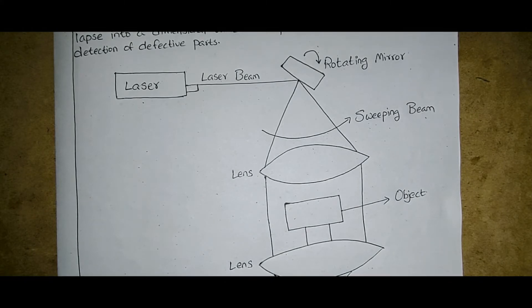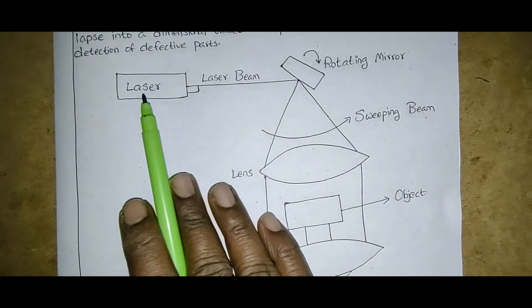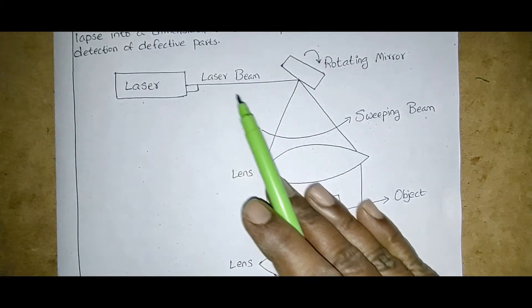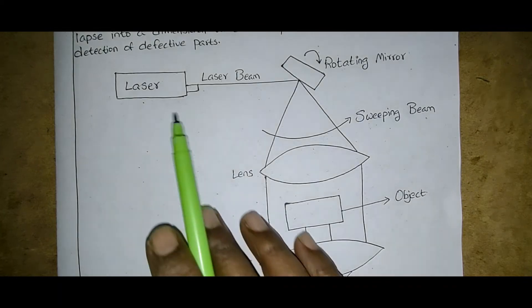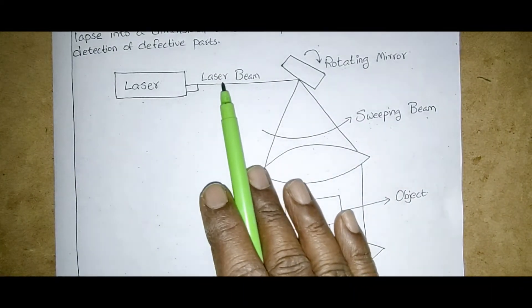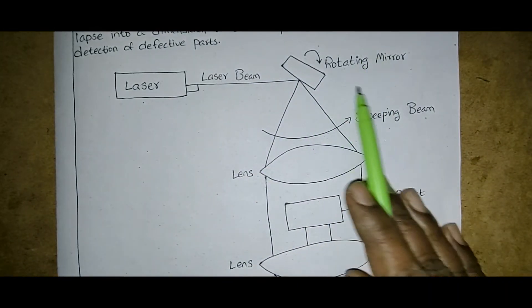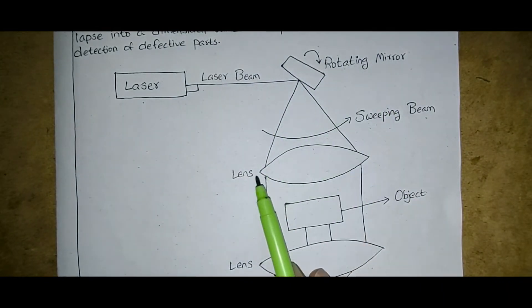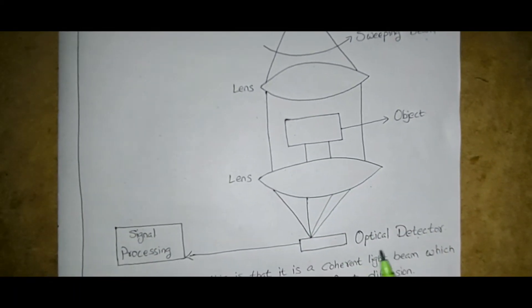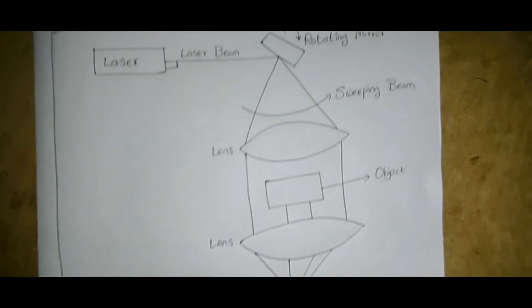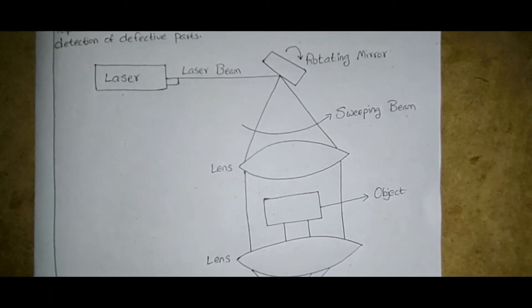Starting with the diagram: from the laser, we get a coherent light beam. This laser beam is subjected to a rotating mirror. There are two lenses — one produces a sweeping beam, and then comes the object. After the object, there is an optical detector, and finally the signal processing unit. It is a simple, systematic setup.